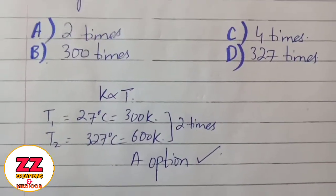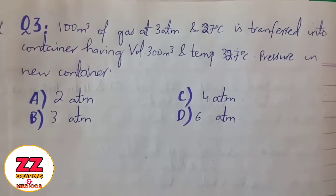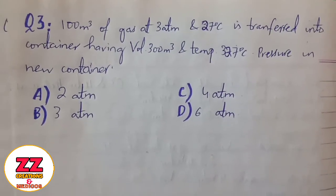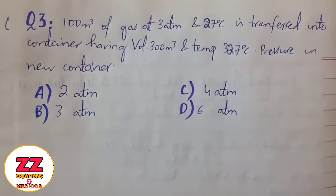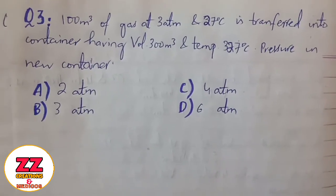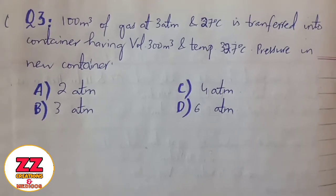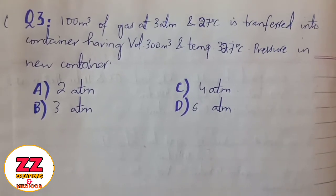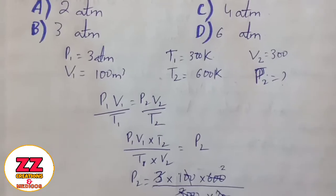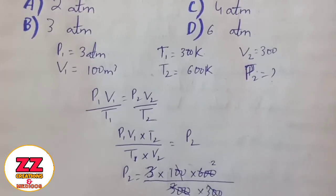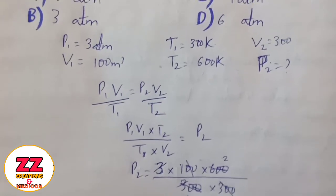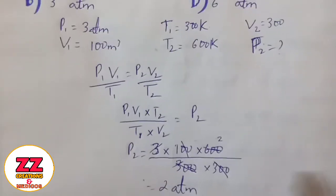Next question: 100 cubic meters of gas at 380 mmHg and 27 degrees Celsius is transferred into a container having volume 300 cubic meters and temperature 327 degrees Celsius. Find the pressure in the new container. First, we write the given data, then we apply the formula P₁V₁/T₁ = P₂V₂/T₂.